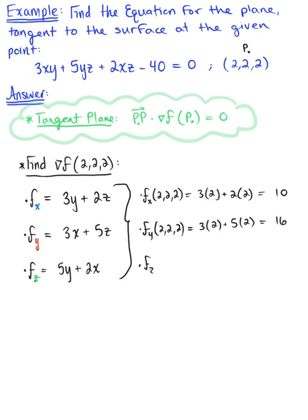Last but not least, the partial derivative with respect to z at (2,2,2): 5 times 2 plus 2 times 2, so 10 plus 4 gives us 14.